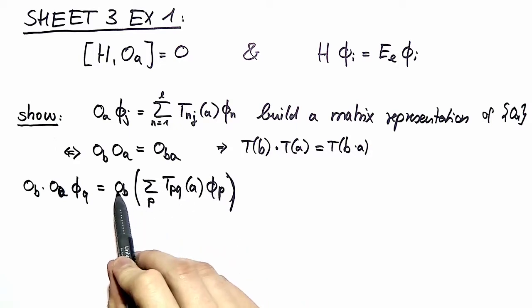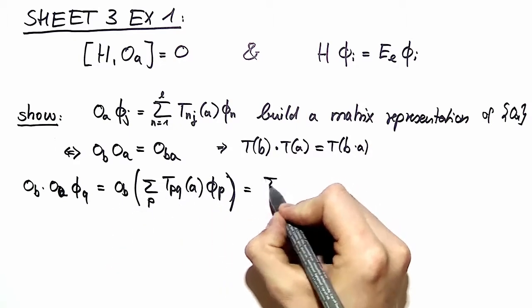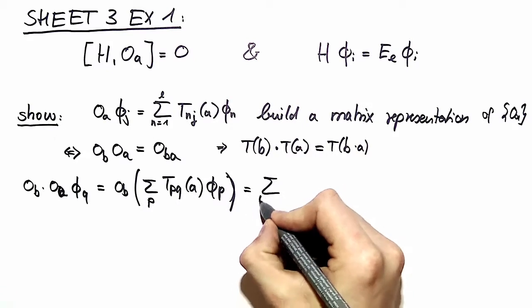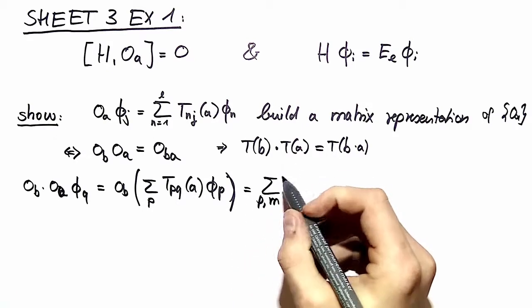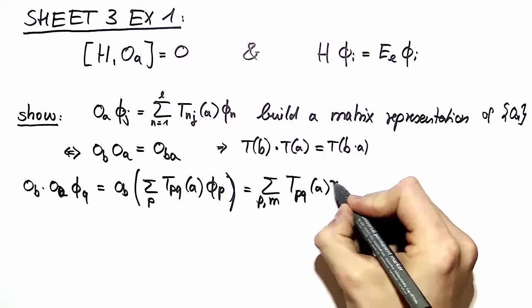This is a number, therefore we can act with OB directly on phi P. So we can write a double sum here over P and the next index we call M, with our two matrix elements.